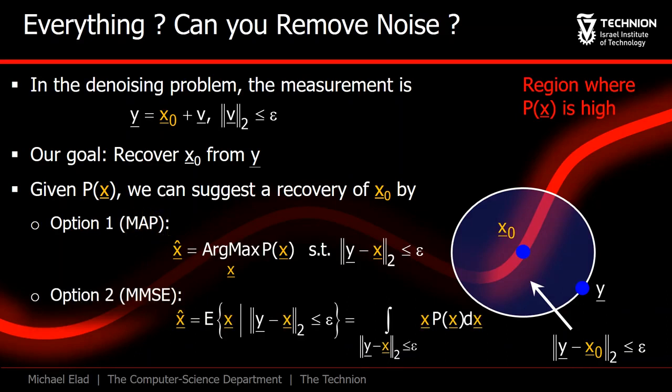A better alternative is to find the expected x in this epsilon sphere, an estimator that is known to give the smallest expected squared error. It is called the minimum mean squared error estimate, MMSE for short. Let's not dive deeply into these estimators at the moment, as we will discuss them in much more details later on in the course.